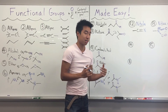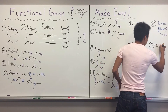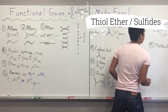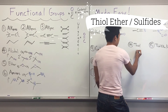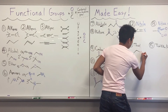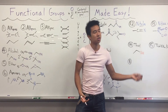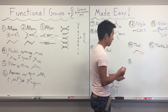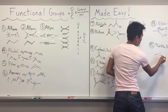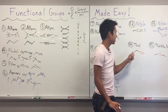Second to last are thiols and thiol ethers, also called sulfides. A thiol is very similar to an alcohol, but instead of OH you have an SH group. Thiols can also be classified as primary, secondary, or tertiary depending on the number of carbons attached to the carbon attached to the sulfur. Thiol ethers are basically ethers except there's a sulfur with carbons on either sides — thiol for the sulfur, ether for carbons on either side.